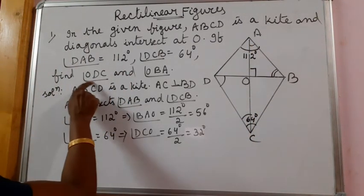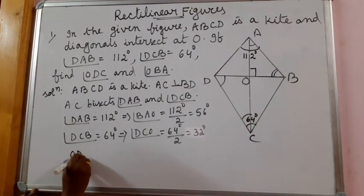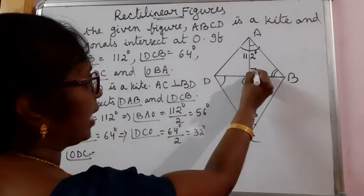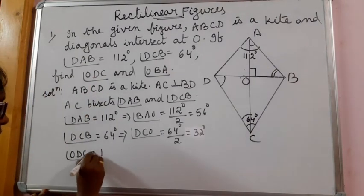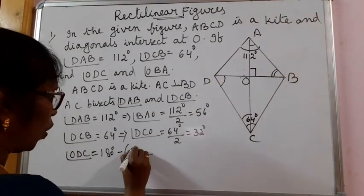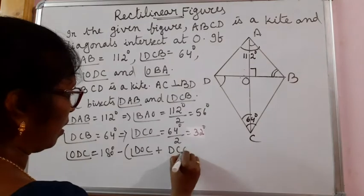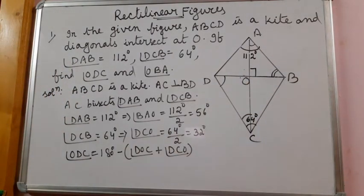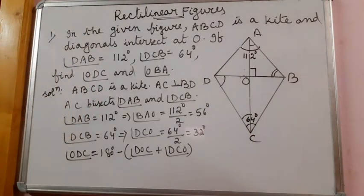Now let us work out first. First, we have to find angle ODC. Angle ODC is the angle of triangle ODC. We know that each of these angles are 90 degrees. It is equal to 180 degrees minus angle DOC plus angle DCO. Sum of three angles is 180 degrees. From that, if we subtract the sum of these two, we are going to get ODC.